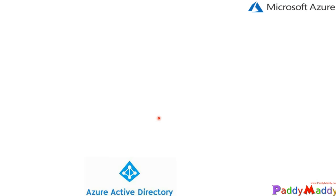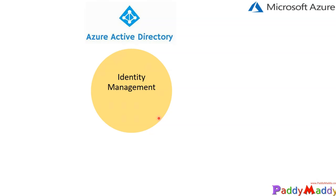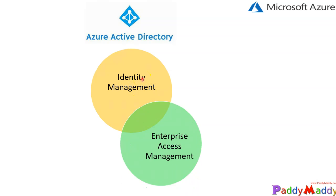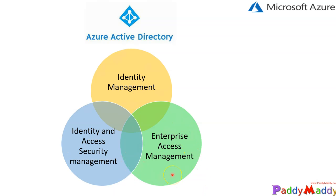Let's try to understand what Azure Active Directory is. In this lecture, we're going to focus on Azure Active Directory, its components, and why it's so important to understand from a solution architect's perspective. I would put it into three different key components: the first is identity management, the second is enterprise access management, and the third is identity and access security management.